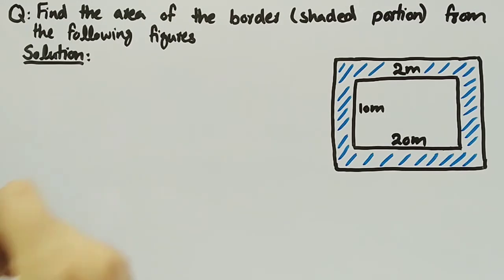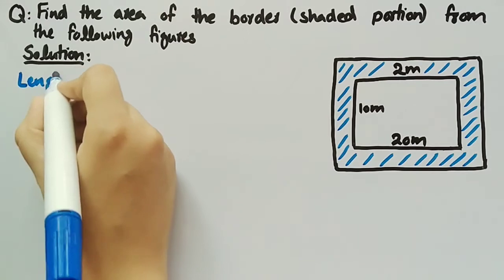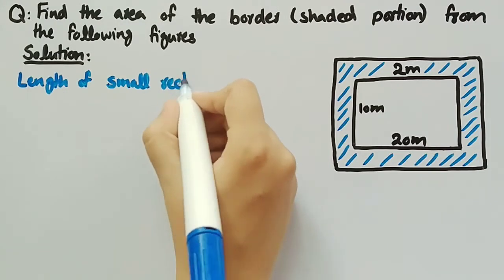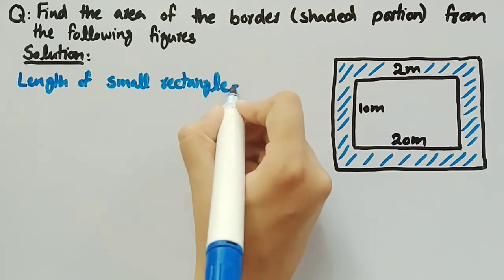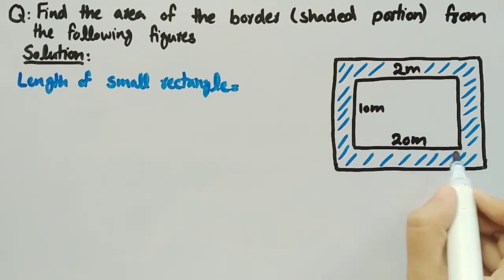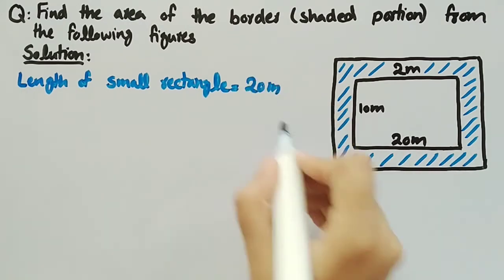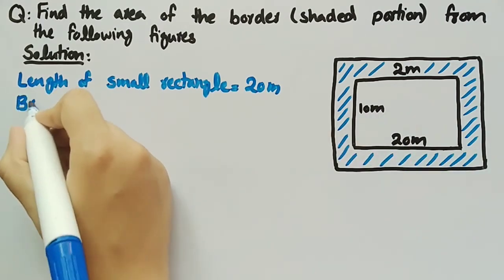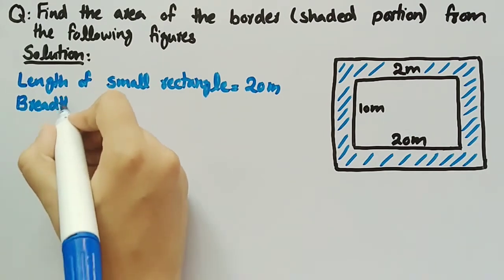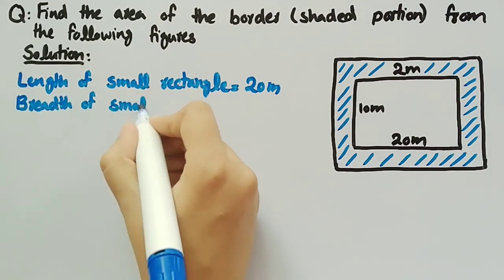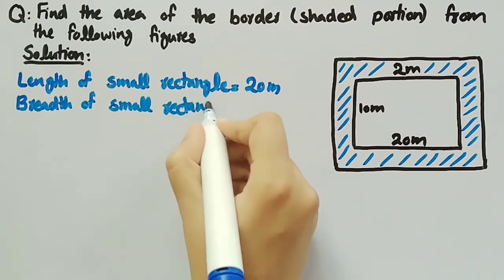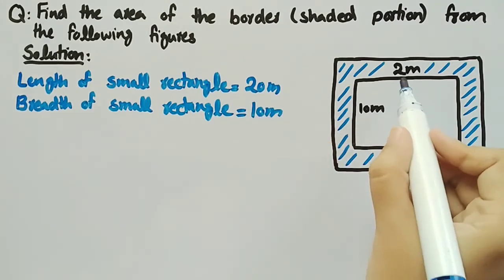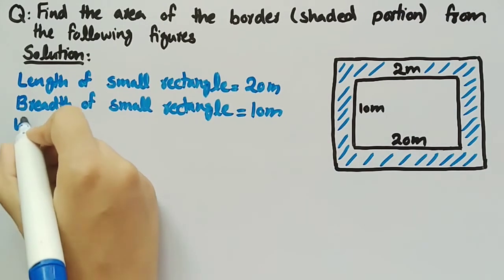The given data is: length of small rectangle is 20 meters and breadth of small rectangle is equal to 10 meters. The width of border is also given, that is 2 meters, so we will write width of border is equal to 2 meters.